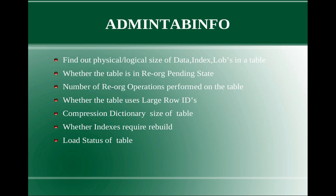If you have to fetch 1000 rows with regular row IDs, you have to do four page reads. Whereas if the table is using large row IDs, in one or two page reads you can get those 1000 rows. So it might be a little bit better in terms of performance for large tables to use large row IDs. The next item is the compression dictionary size of a table.